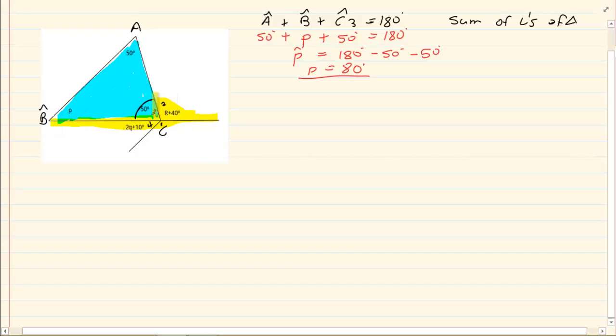Now, there's two ways you can do this. You can say R plus 40 is equal to A plus B. Why? Exterior angles of a triangle.